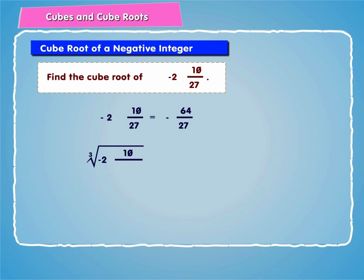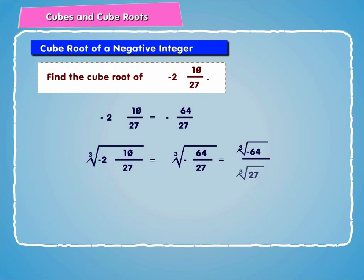Therefore, the cube root of minus 2 and 10 by 27 is equal to the cube root of minus 64 by 27, which equals the cube root of minus 64 divided by the cube root of 27, giving minus 4 by 3, which equals minus 1 and 1 by 3.